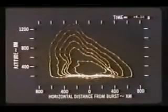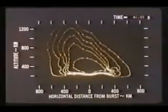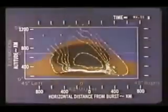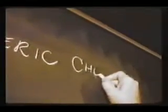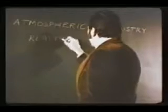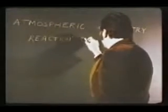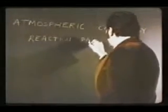The computer program that calculated the electron density shown in the first part of this film, the RANK program that computes radar performance, and computer programs used to predict communication systems performance all have a common base: knowledge of the atmospheric chemistry. Much of our present capability in modeling the chemistry of the atmosphere has been made possible by research performed under the reaction rate program.